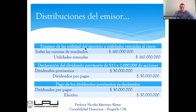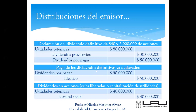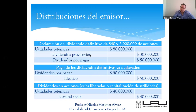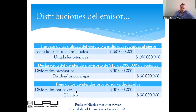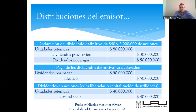Sí, no puede ser al revés. Mira, si voy secuencialmente: primero declaré el provisorio y pagué el provisorio. Después declaré el definitivo y pagué el definitivo. Pero en esa declaración de dividendos definitivos, ¿desde ahí se saca el pago de los provisorios? No, pues eso ya los pagué anteriormente. El efectivo había salido de caja en junio.